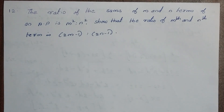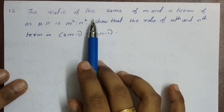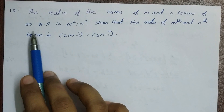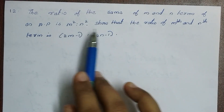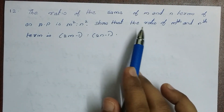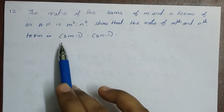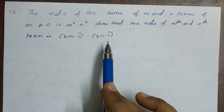Hi students. So now we have problem 9.2. The ratio of the sum of m and n terms of an AP is m² to n². Show that the ratio of the mth and nth term is (2m-1) to (2n-1).